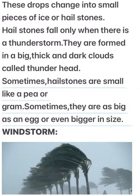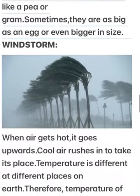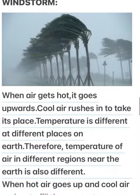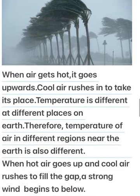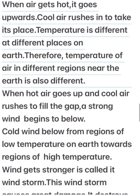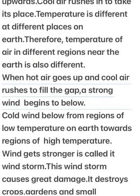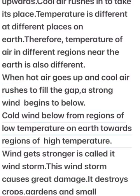Windstorm. When air gets hot, it goes upwards. Cool air rushes in to take its place. Temperature is different at different places on earth. Therefore, temperature of air in different regions near the earth is also different. When hot air goes up and cool air rushes to fill the gap, a strong wind begins to blow. Cold wind blows from regions of low temperature towards regions of high temperature. When wind gets stronger it is called a windstorm.